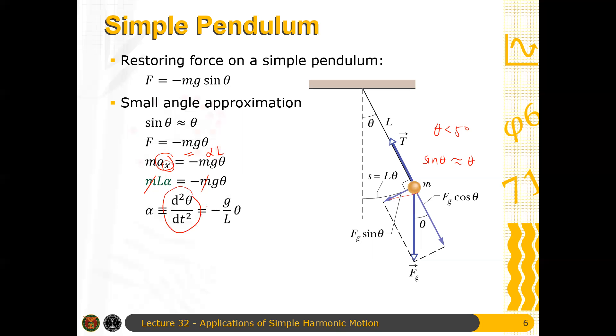Kung mapapansin mo itong equation na to. This is important. This is the second order ordinary differential equation. But if you remember our equation before, this d squared x dt squared is minus omega squared x. Or this is equal to minus k over m x. Tama? Hindi nagmamatter kung anong mga variables yan. They will give the same form of the equation or of the solution. Equivalent itong dalawang equations na to. Because they have the same form: the second time derivative by negative of some quantity times the displacement.